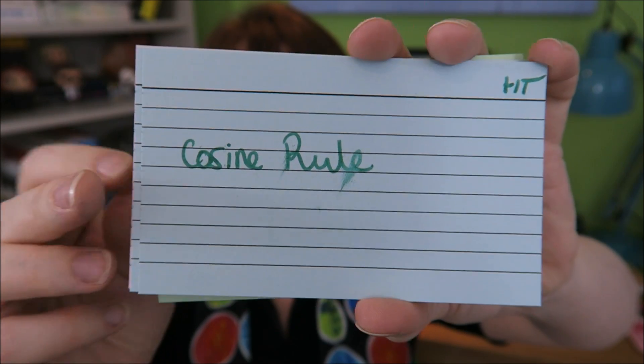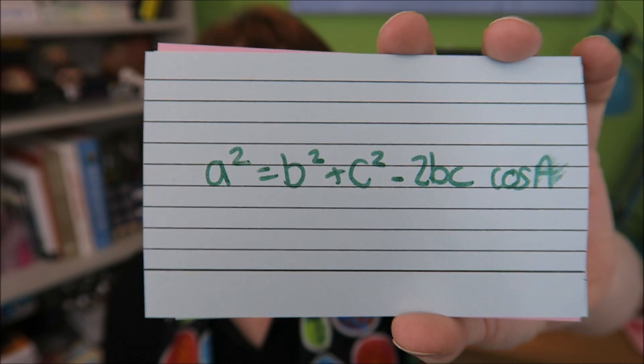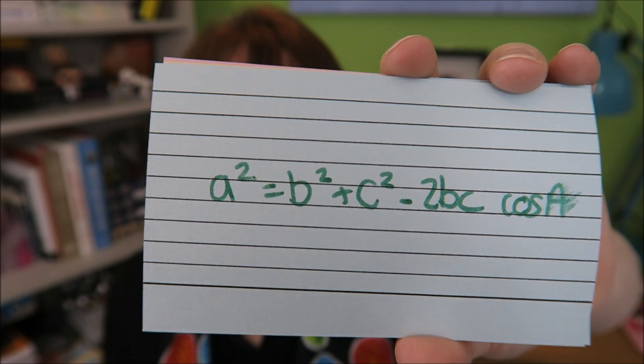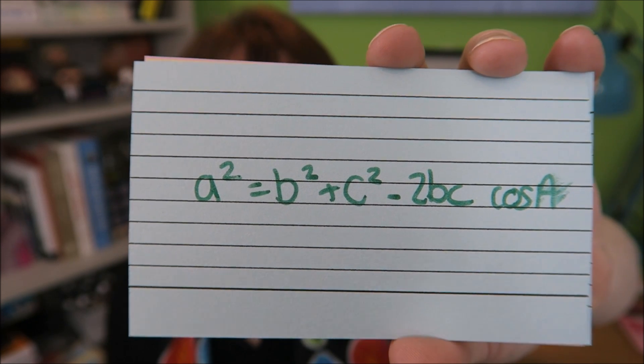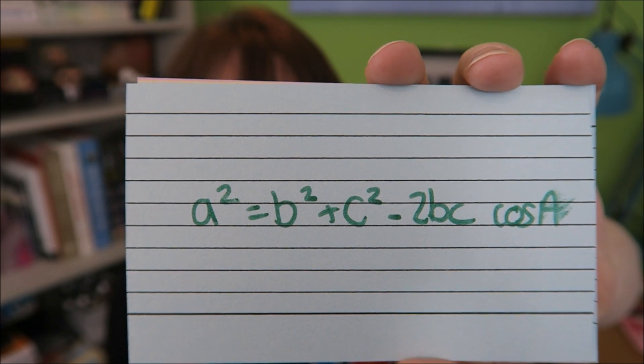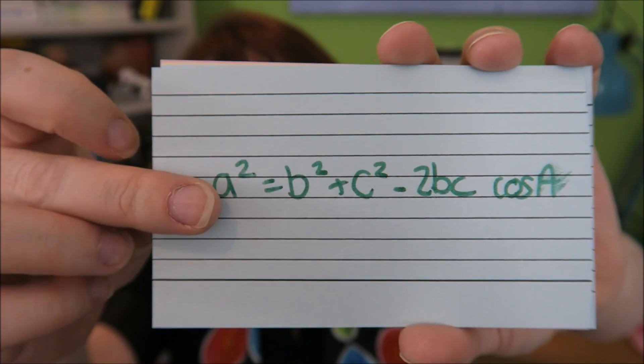Your cosine rule, one of the nastier ones to have to remember. It is A squared equals B squared plus C squared, those are your sides, minus two B C, more sides, cos A, which is an angle. A squared equals B squared plus C squared minus two B C cos A.